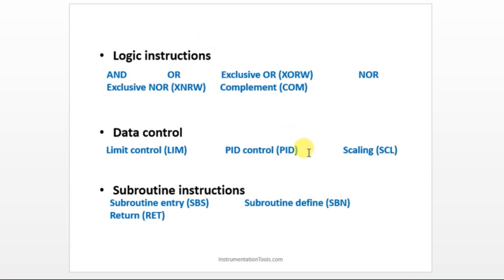And subroutine instructions: SBS, SBN, and RET. These three are used for subroutines. That's it about the instructions in the Omron software CX Programmer.